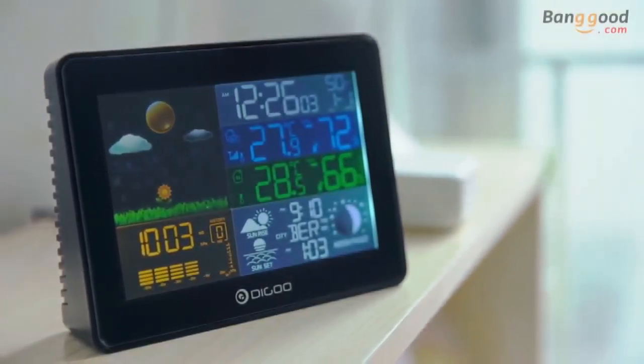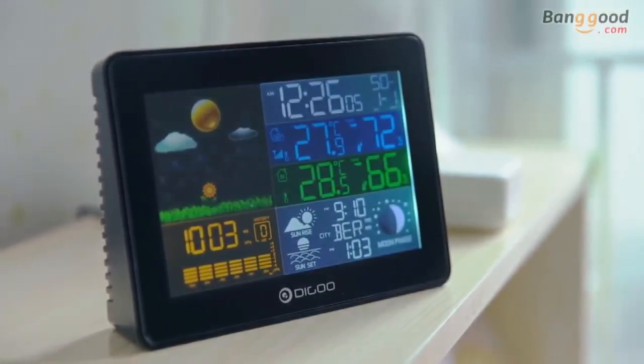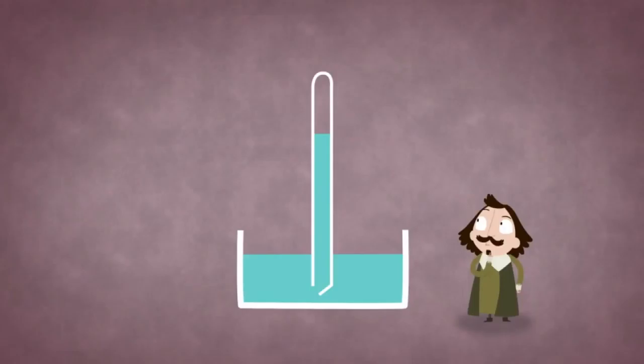The barometers used today are completely electronic and show the pressure reading on an LCD screen. The simplest kind of barometer is a tall, closed tube standing upside down in a dense liquid metal called mercury.